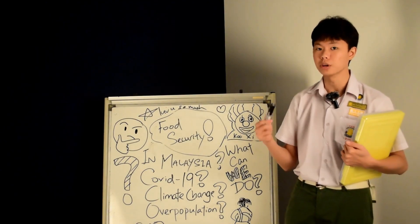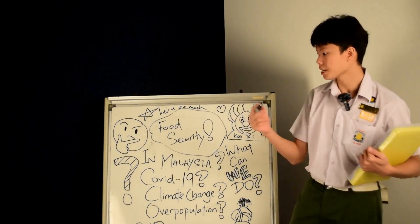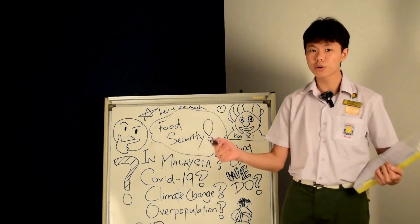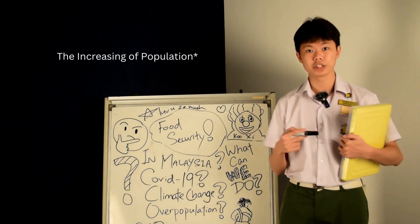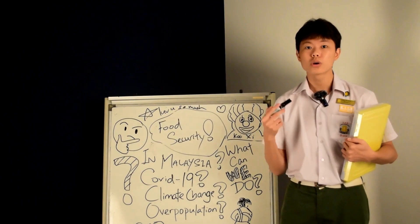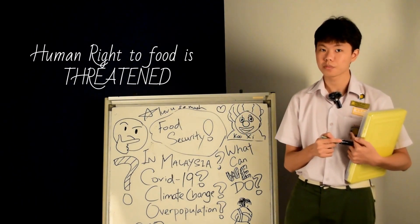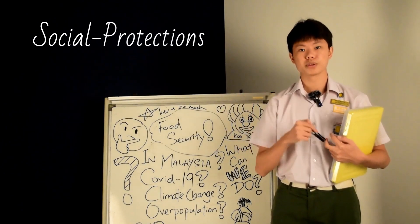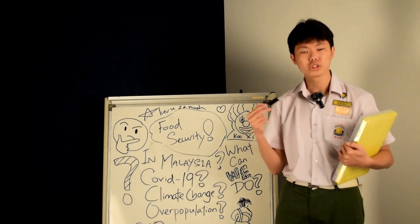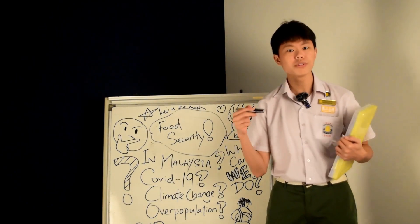But there are things stopping us from achieving food security, like climate change, the impact of COVID-19, and of course, the increasing population of Malaysia. Poor food security could really lead to poverty, threatening human rights to food and social protections. So we should get ourselves prepared for the next generation so that the impact of it wouldn't fall onto them.